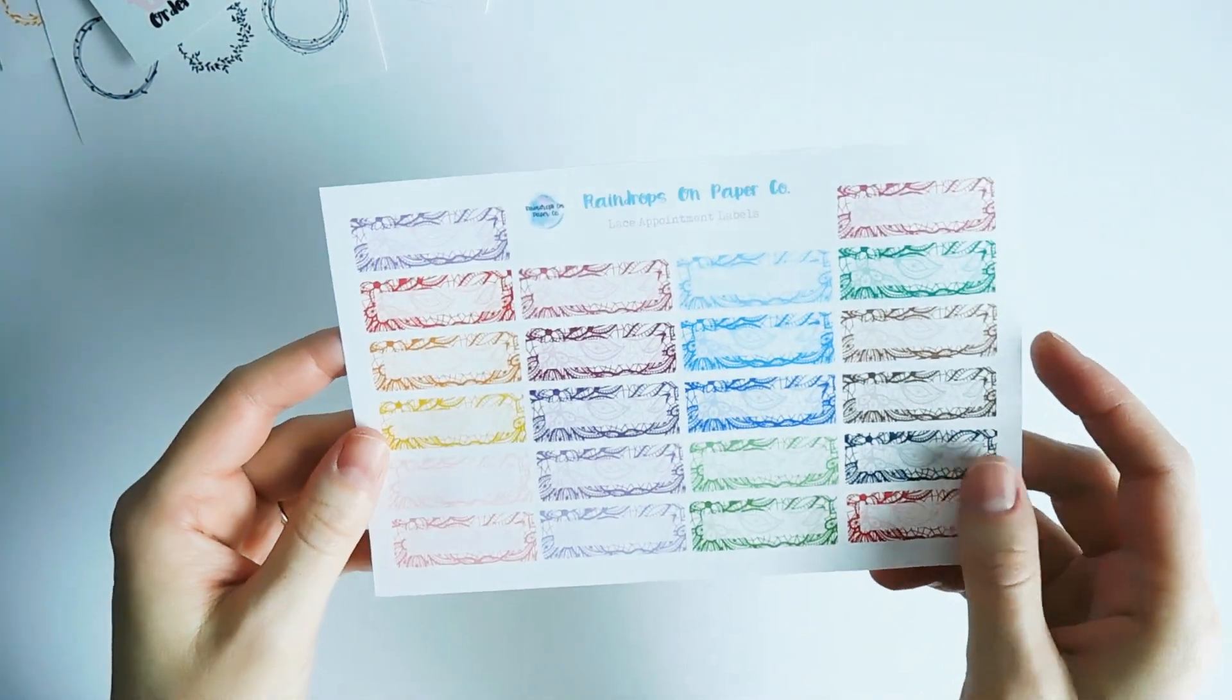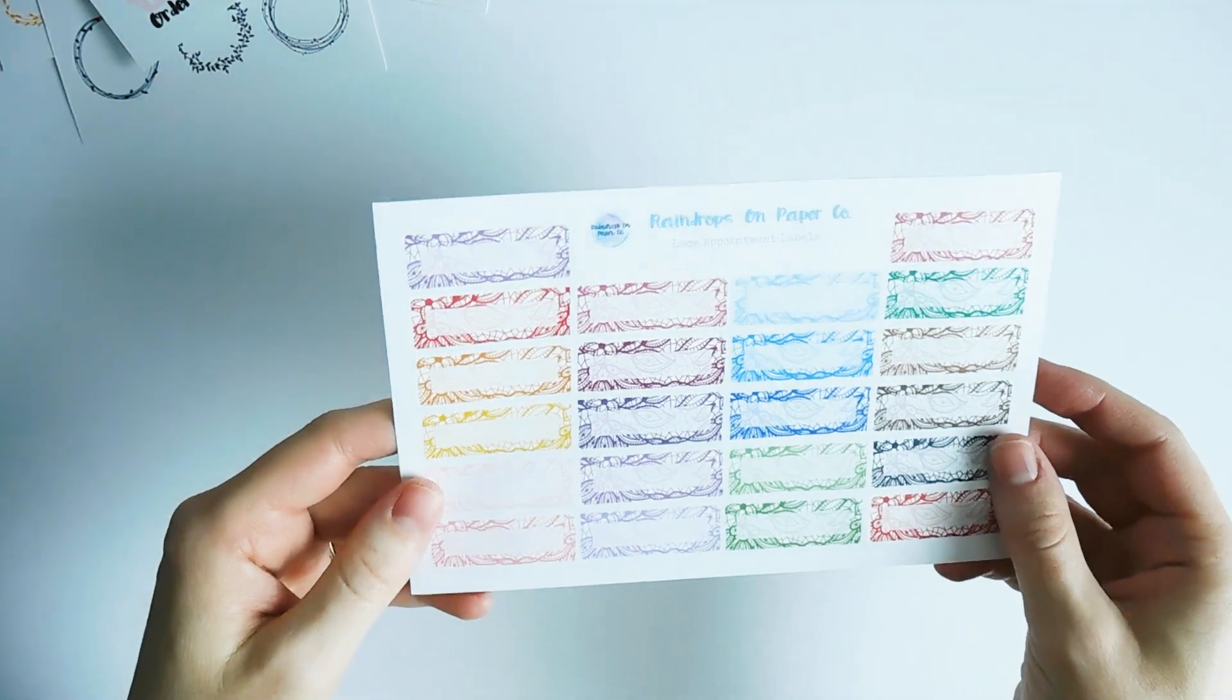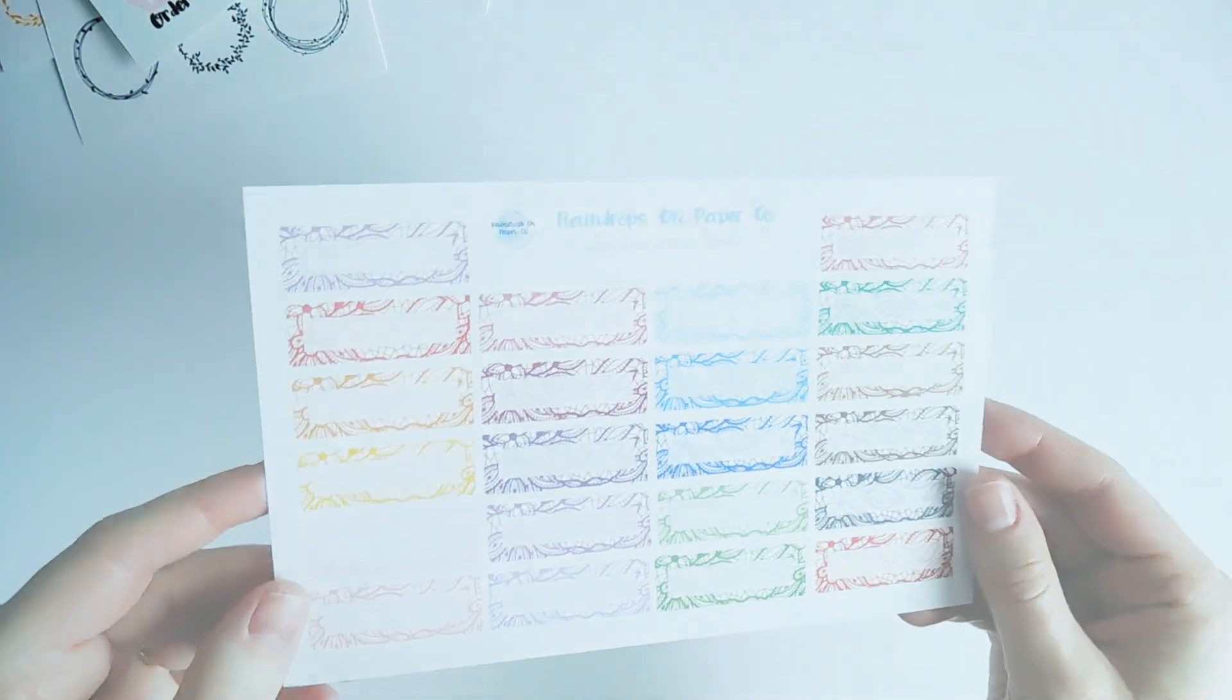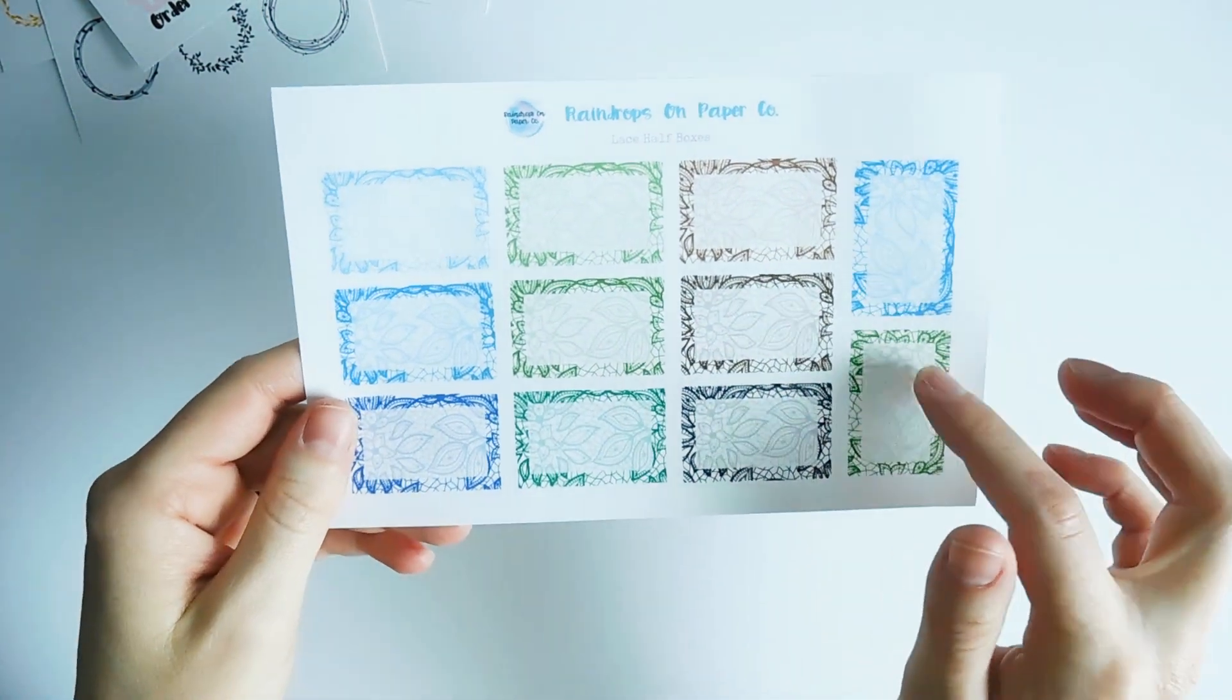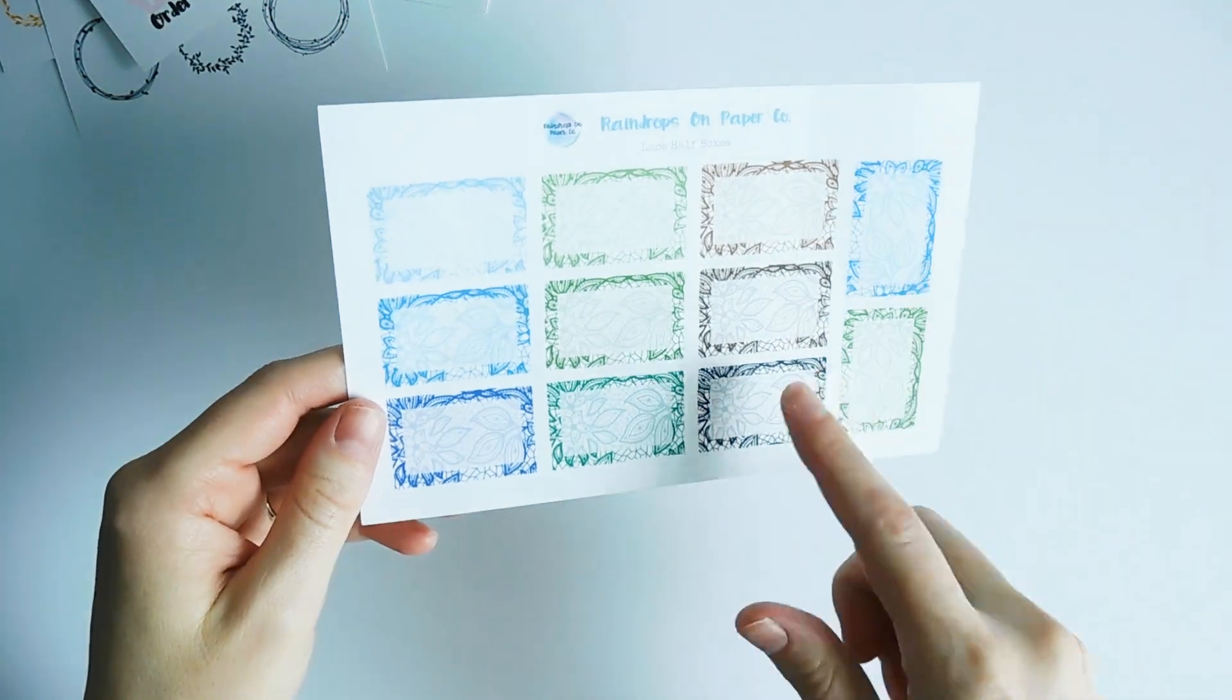And then here we have lace appointment labels. They're like the lace full boxes only in smaller size. And to go along with all of the lace boxes I have them in half size and these come in the other color options as well.